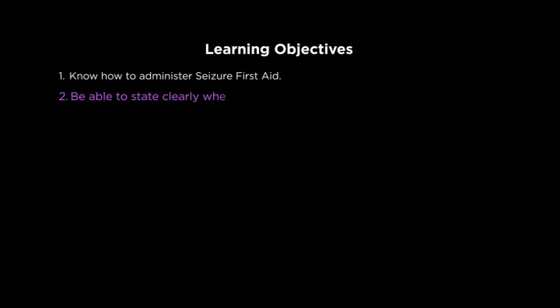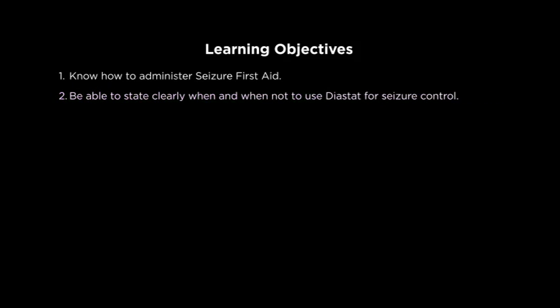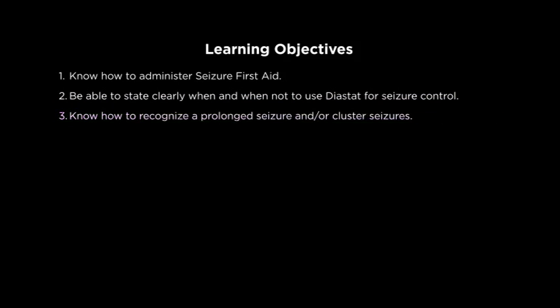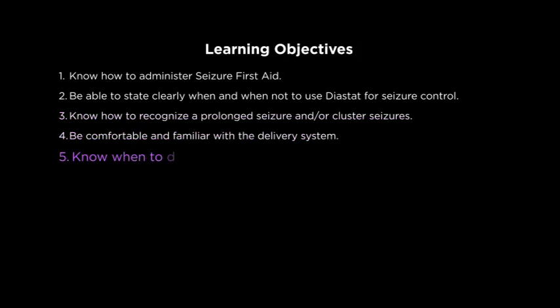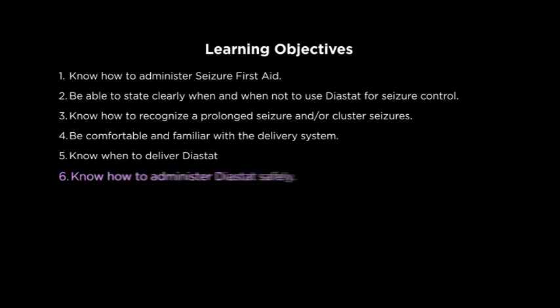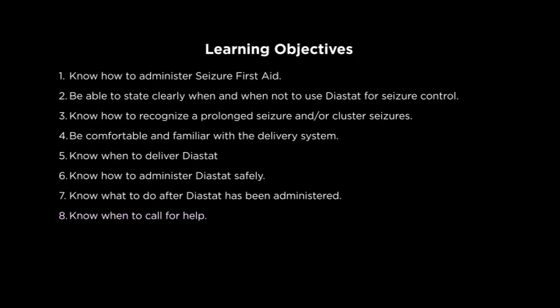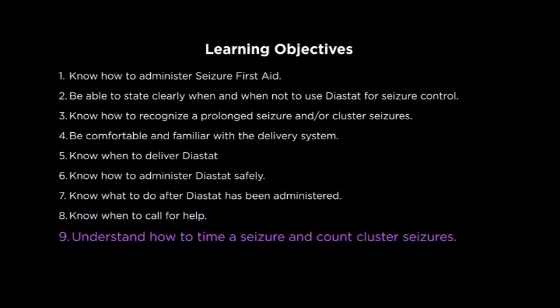The learning objectives for this training are: number one, know how to administer seizure first aid; number two, be able to state clearly when and when not to use diastat for seizure control; number three, know how to recognize a prolonged seizure and/or cluster seizures; number four, be comfortable and familiar with the delivery system; number five, know when to deliver diastat; number six, know how to administer diastat safely; number seven, know what to do after diastat has been administered; number eight, know when to call for help.